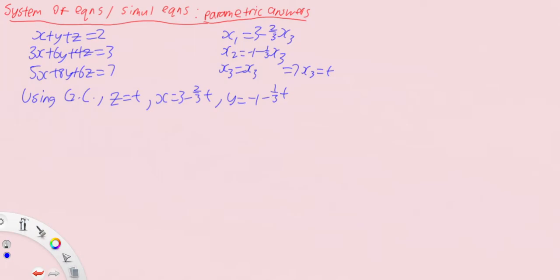So this example just shows you that not necessarily you end up with a unique solution. Unique solution being just one solution. Whereas this is a non-unique solution because there's multiple, in fact, infinite number of solutions.